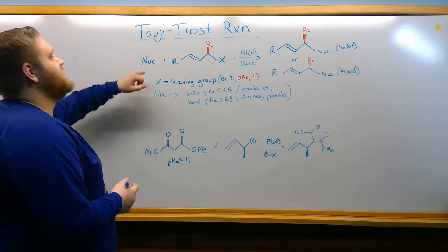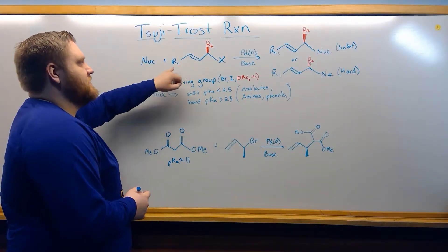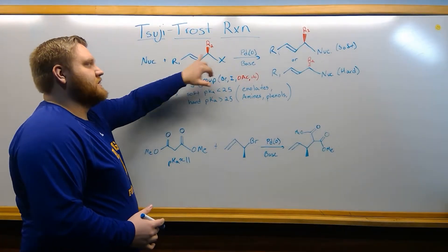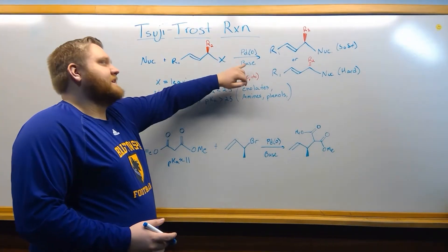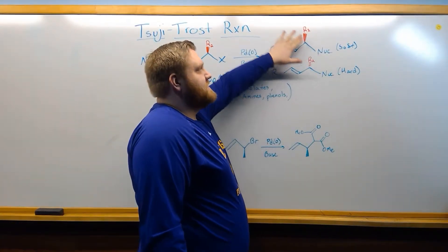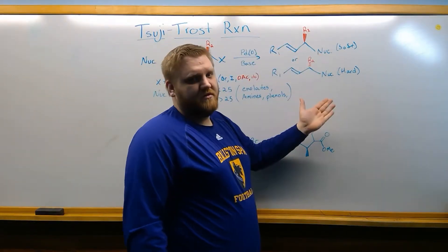The Tsuji-Trost involves the connection of a nucleophile and an allylic compound, where these R-groups could just be hydrogens, but the important thing is we have a leaving group one carbon away from our double bond. We have a palladium catalyst, and it's usually under basic conditions, and we can either get substitution retaining stereochemistry or inverting stereochemistry, depending on our nucleophile.